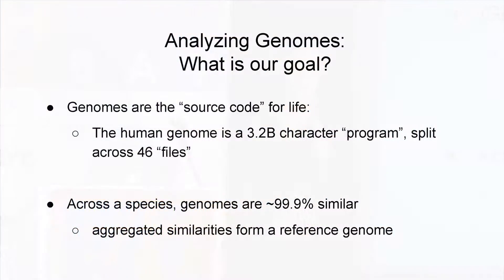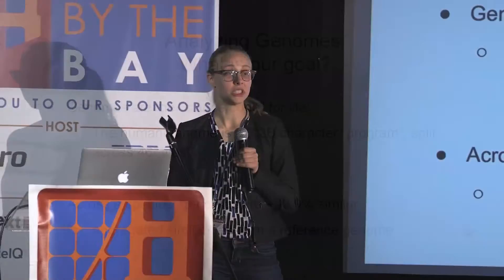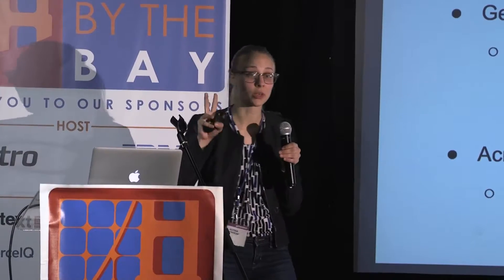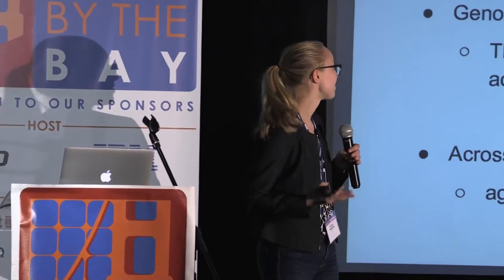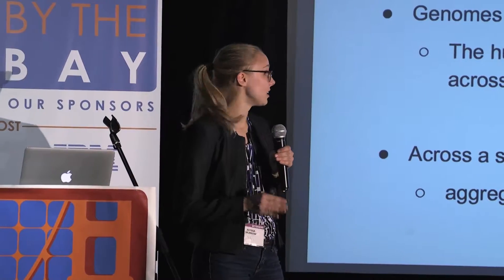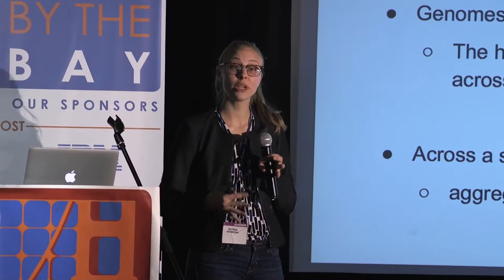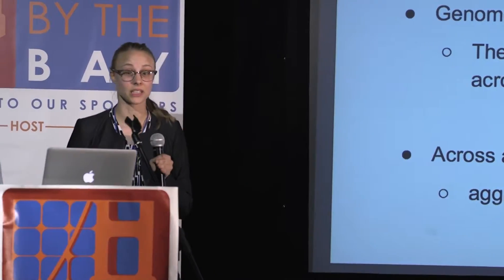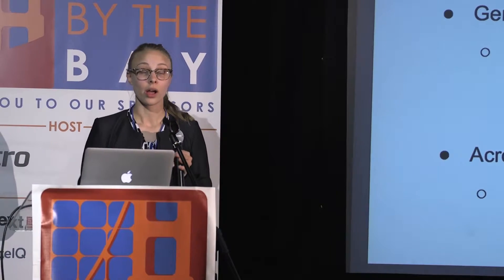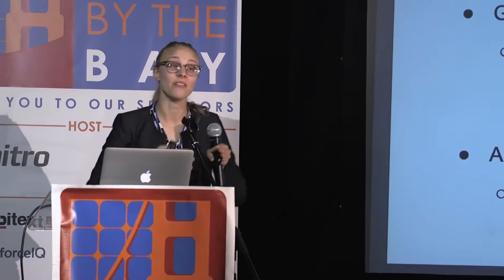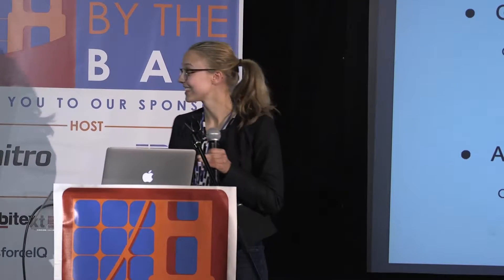Let's talk a little bit about background. What do we mean to analyze a genome? What is genomic analysis, and what is our goal? We can think of genomes as a source code for life. The human genome in particular is 3.2 billion base pairs — a program of A, T, G, and C.